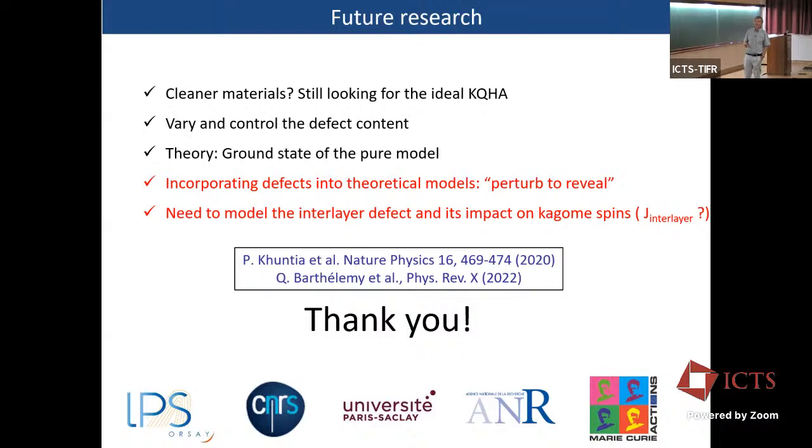Spin texture around the defect, which has a staggered response. And this is why your main line is progressively broadening with alternating susceptibilities. And there is a paper by Mila Russo-Chatsakis showing this theoretically. And there is a quenching of the dynamics for near-neighbor oxygen to a defect. So with this, I want to thank you for your attention. And the future tracks, of course, cleaner materials, still looking for the ideal compound. I know that there are lots of materials group in India. So maybe one of them will synthesize the perfect Kagome. Another track right now is to vary and control the defect content and see how it varies and how it impacts the properties. Of course, there is still a pending problem. What is the ground state of the pure model? Theoretical problem. And I insist that now in theoretical models, one should incorporate the defects into this theoretical model. So this is a perturb to reveal strategy. And of course, need to model the interlayered defect and its impact on Kagome's consequence. Thank you very much.